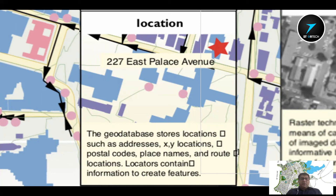If you don't know the address, place names can be used as a location or locator. For example, if you want to see a location on Google Maps, you can search by place name or find a location using exact X and Y coordinates.